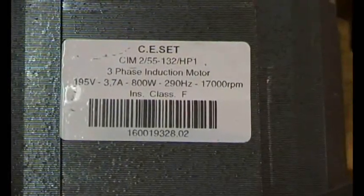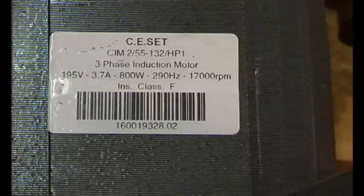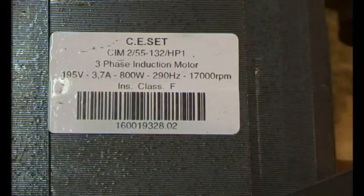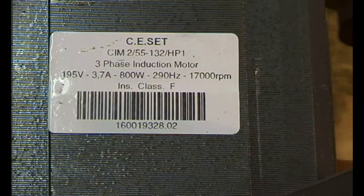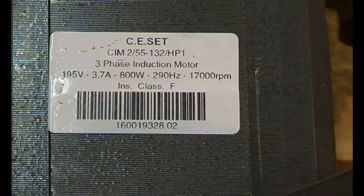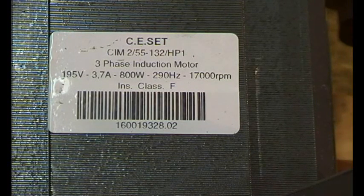290 hertz at 17,000 revs. Okay, there's some numbers we can work on. As we know, the speed of an induction motor is regulated by the frequency, hence a variable frequency drive will change the speed. So what we need to do is we're going to try and run this on 50 cycles. So 290 is very close to 300.